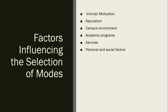Personal और social factors भी बहुत important role play करते हैं। कभी-कभी university बहुत अच्छी होती है — environment, academic programs, services सब ठीक — लेकिन accommodation की problem, financial issues, या social factors जैसे male-female separate education की preference के कारण student उसे select नहीं कर पाता।